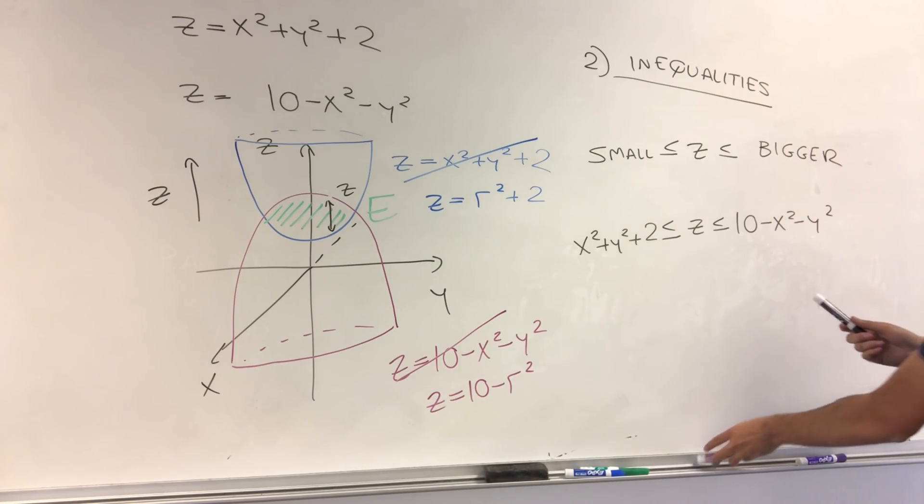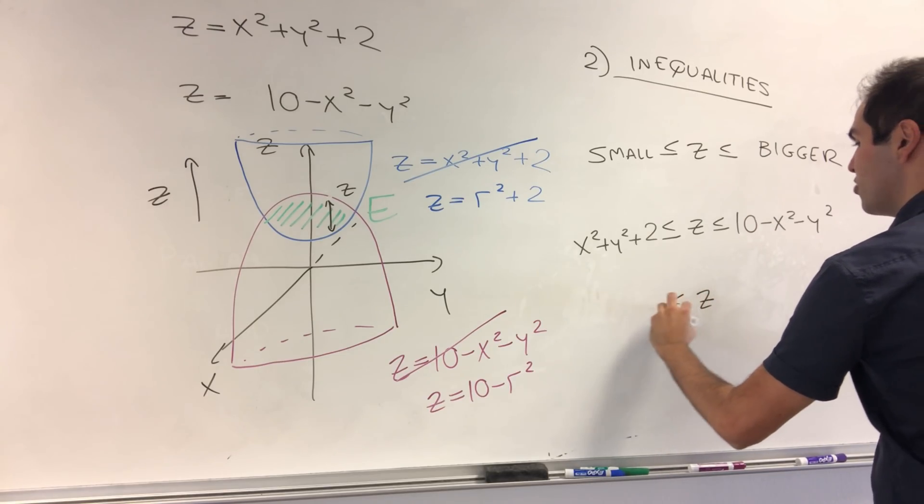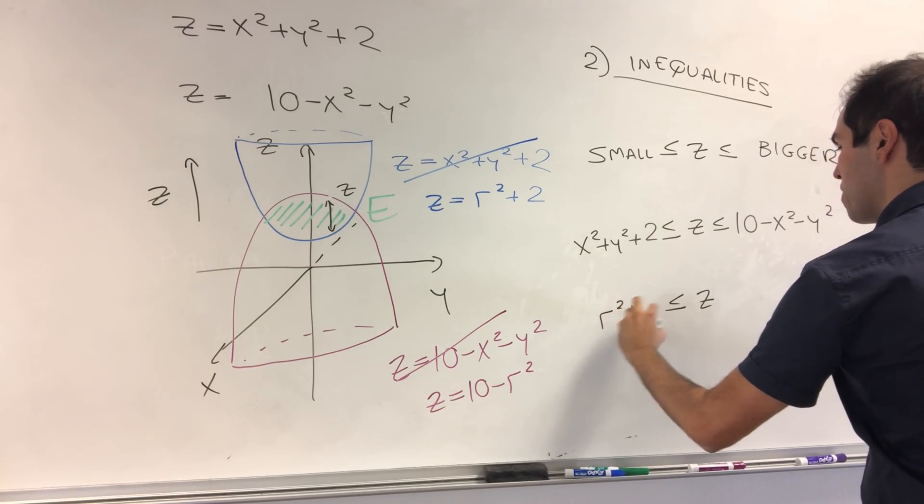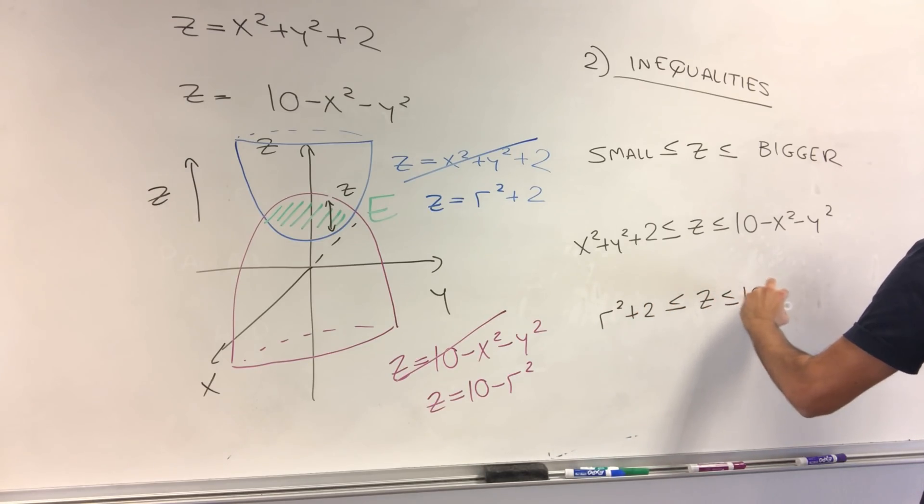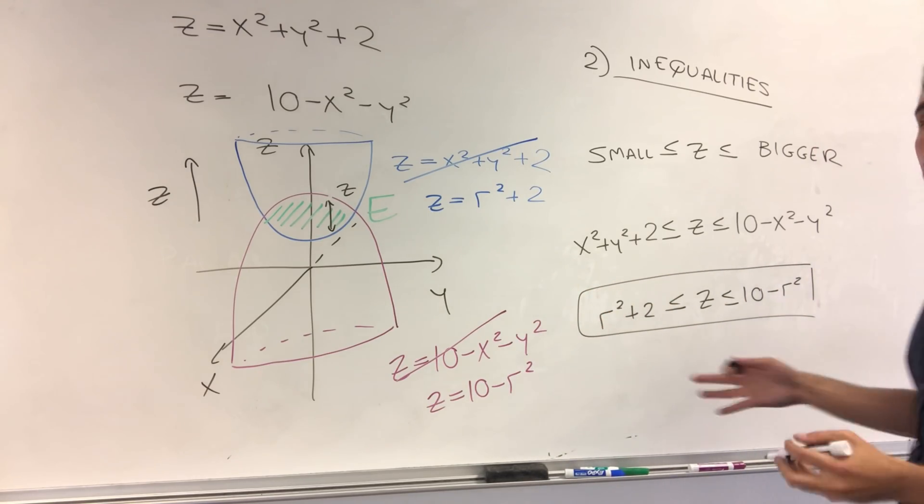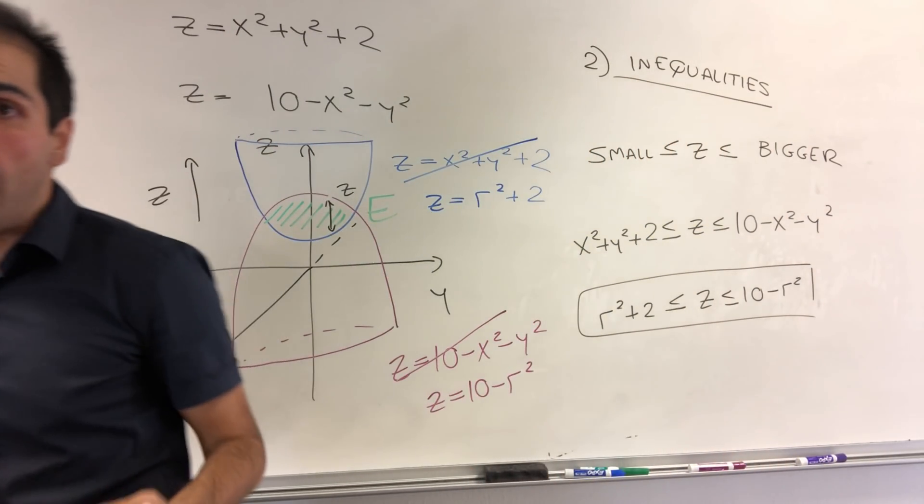Okay, so in particular with z, this becomes z between r squared plus 2 and 10 minus r squared. This is good, and now we need to find x and y.